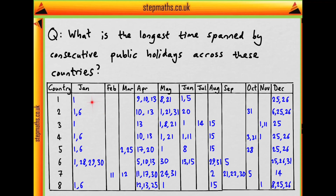Starting with January, what's the longest span we can see? In country six we have 28, 29, and 30 — that's a three-day span, so this could be a good place to start. We should also be careful of spans across different months. Many countries have the first of January as a holiday. Looking at December, the 31st is there but nothing before it, so that's only a two-day span from the 31st to the 1st.